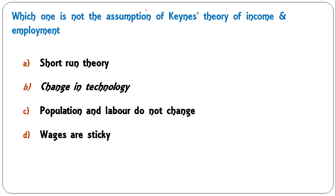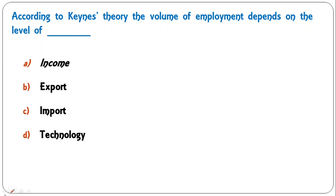Which one is not an assumption of Keynes' theory of income and employment — short run, change in technology, sticky wages, or no change in population? Keynes propounded his theory on the assumption that it is for the short run with no change in technology, population, or labor. The incorrect option is 'change in technology' — Keynes assumed technology as constant. So B is the correct answer.